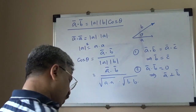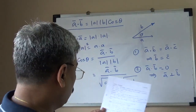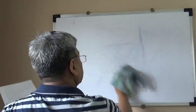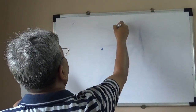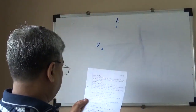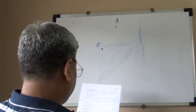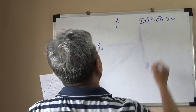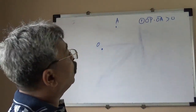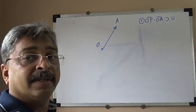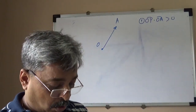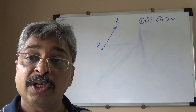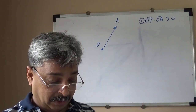Given two points O and A, identify the locus of point P in each of the following cases. O is fixed and can be called the origin; A is fixed. Find the locus of P such that: OP·OA is greater than 0, OP·OA equals 0, and OP·OA is less than 0. Think about it — it is simple, and I am not giving you the answers.